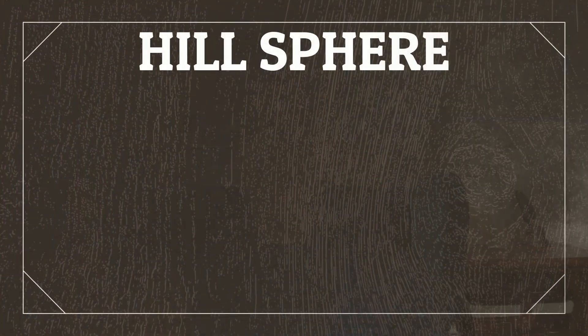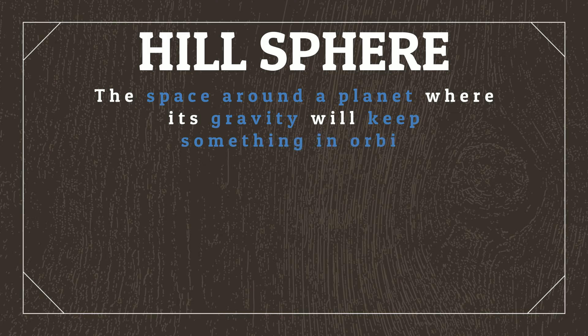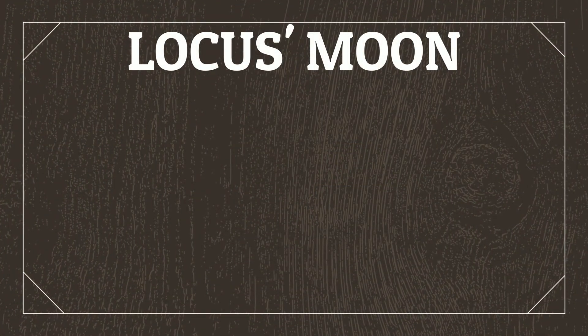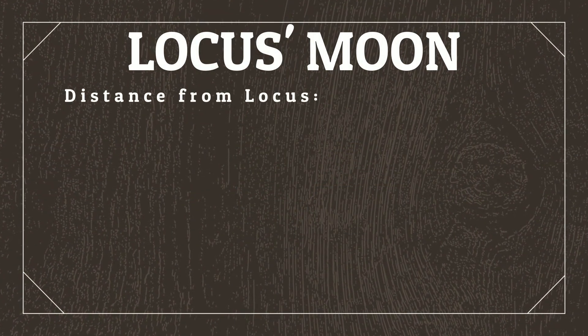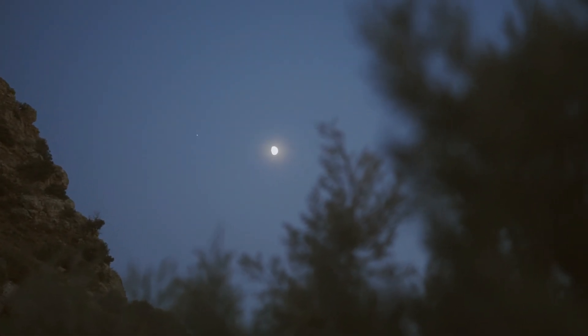Before we make the moon, we need to determine the hill sphere of Locusts, which is the space around a planet where its gravity will keep something in orbit around it. The output of this equation is measured in Earth radii. Now that we've got that value, let's give Locusts a single major moon, to make sure that Locusts' axial tilt will be stabilized. Major moons are generally located within the inner half of a planet's hill sphere, so let's put it at just under 80 Earth radii away from Locusts. For reference, Earth's moon is 60 Earth radii away from Earth.